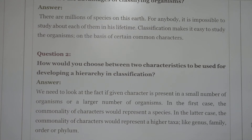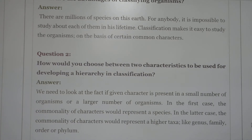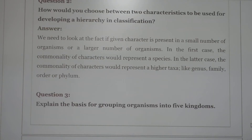Next question: how do you choose between two characteristics for the development of a hierarchy in classification? We need to look at whether a characteristic is present in a small number of organisms or a large number. In the first case, the commonality of characters would represent the species level. In the later case, the commonality of characters would represent a higher taxon like genus, family, order, class, or kingdom.